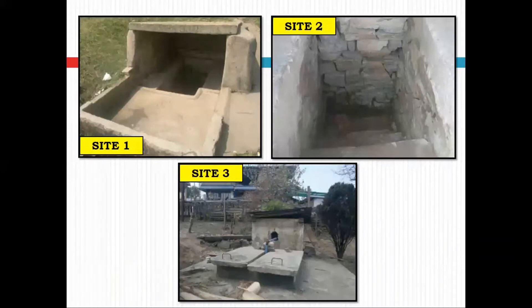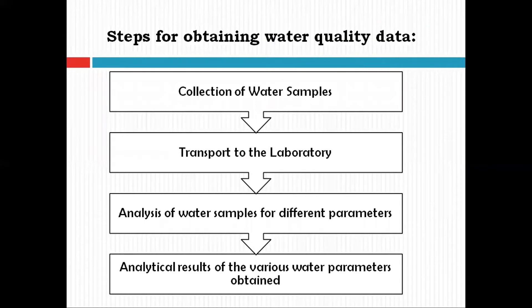For example, let's assume that I am interested in determining the groundwater quality of three different natural springs. So first, I have to collect samples from these three different natural springs. Then I transport the water samples to the lab, and in the lab I'll analyze the water samples for different selected water parameters. As a result, the analytical data of the various parameters will be obtained.